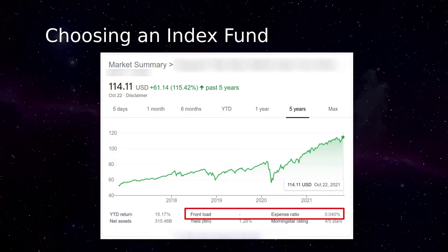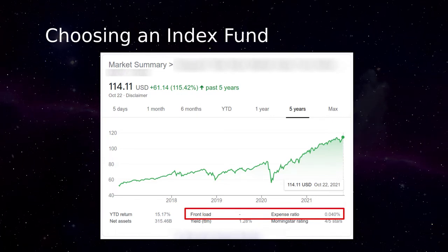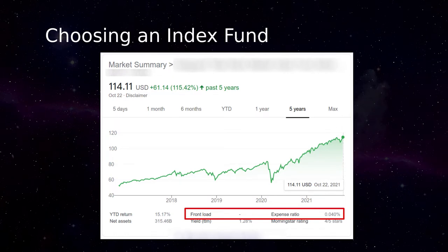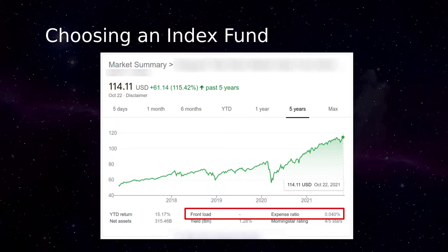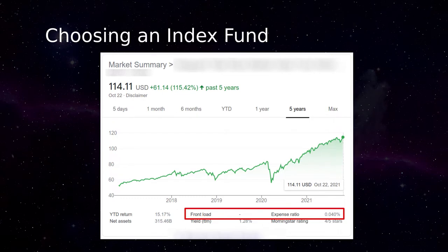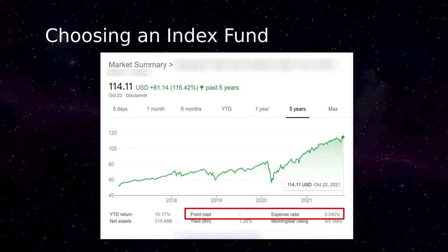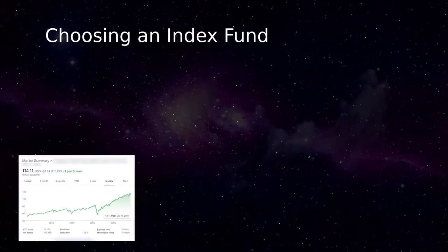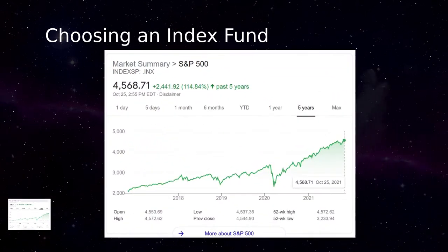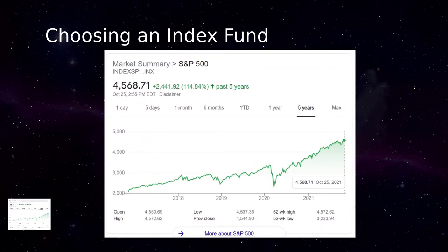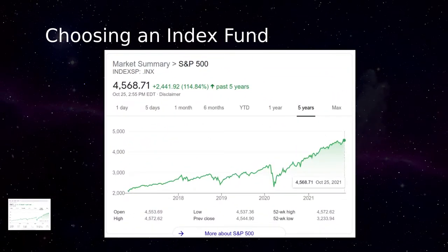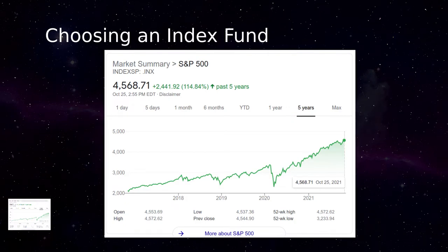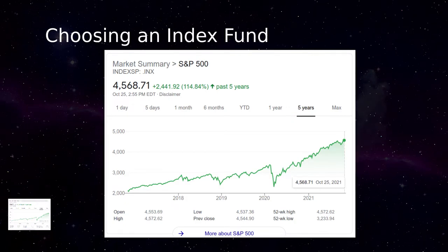In the event of a large purchase, some funds may waive the front load, but this should be researched in advance. The Morningstar rating at the lower right may provide useful guidance if you take the time to research what the rating means. For comparison, here's a five-year chart for the Standard & Poor's 500 Market Index, which shows that my example fund — designed to track this index — matches its growth almost exactly.